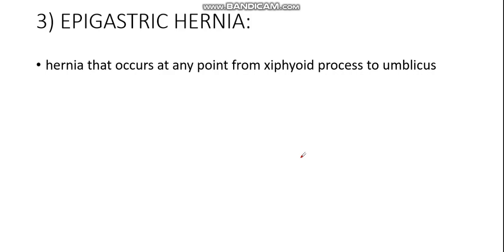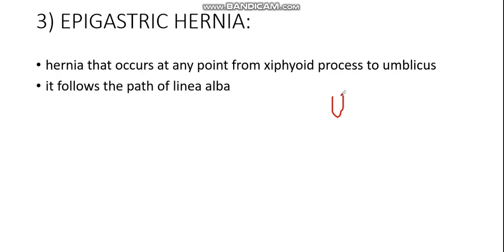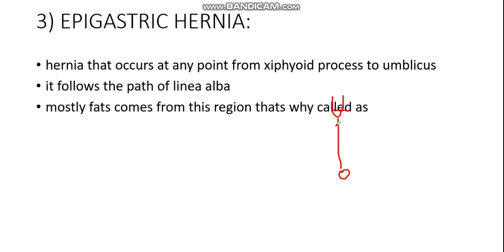Then we have epigastric hernia — the hernia that occurs at any point from the xiphoid process to the umbilicus, following the path of the linea alba. So from the xiphoid process down to the umbilicus, whenever any defect occurs along the linea alba, that is called epigastric hernia. Mostly fat comes from this region, which is why it is called the fatty hernia of the linea alba, though the bowel can also come out from this point.